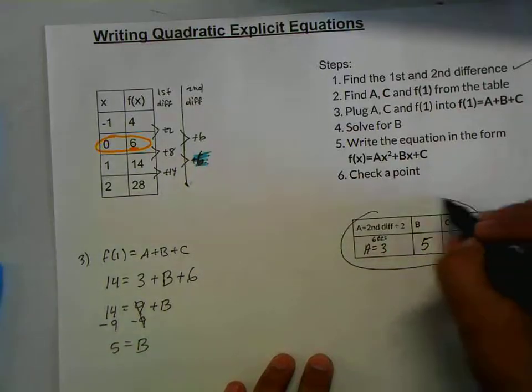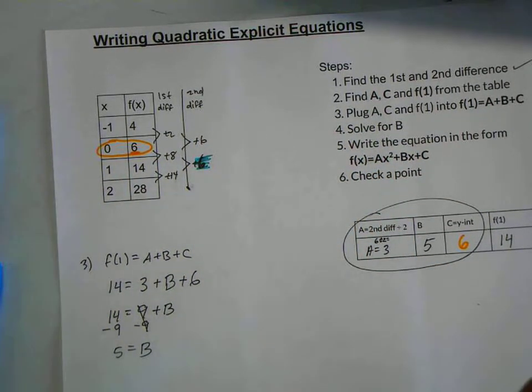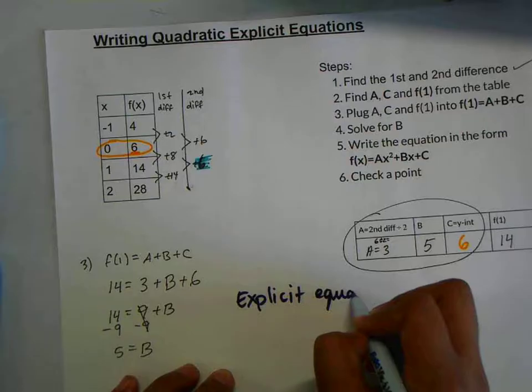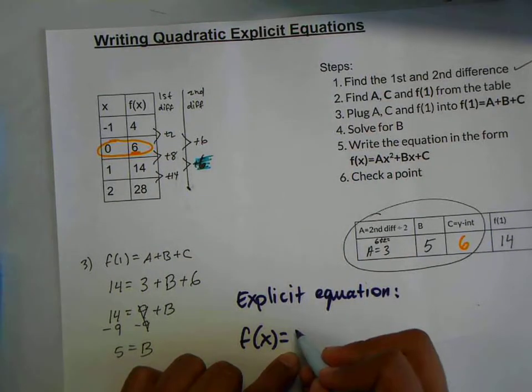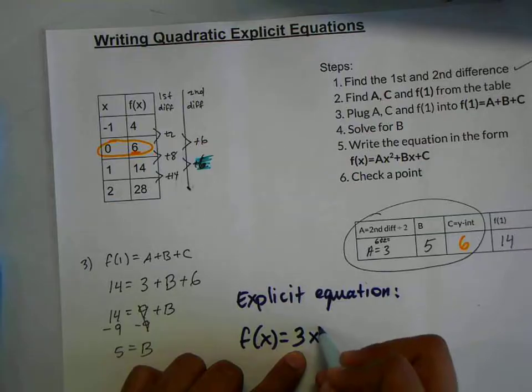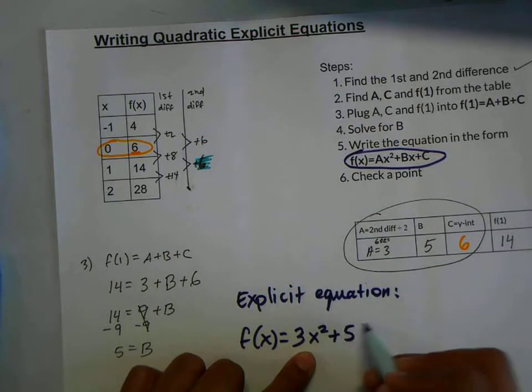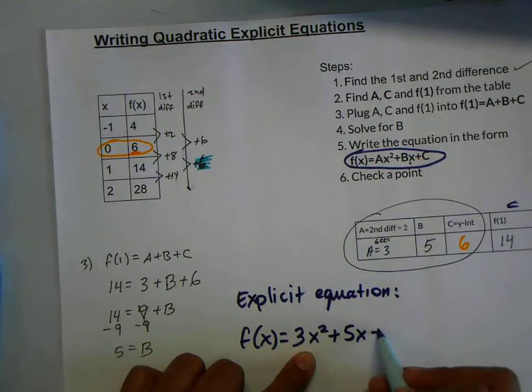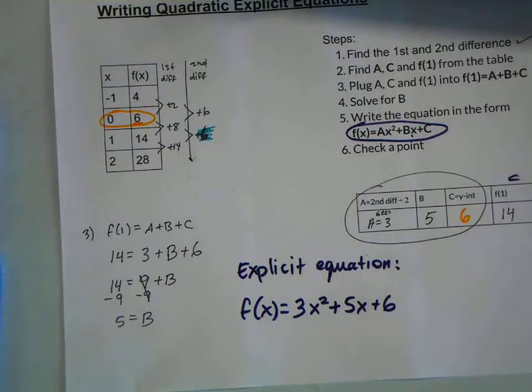Now I can fill out the remaining part of this table here. So now that I have my ABCs, I can write the equation in the standard form, ax squared plus bx plus c, by replacing the ABCs. Here is my explicit equation in standard form. We have f(x) is equal to a, which is 3, times x squared. Plus b, which is 5, x plus c, which is 6. And voila! You have your explicit equation right there. 3x squared plus 5x plus 6.